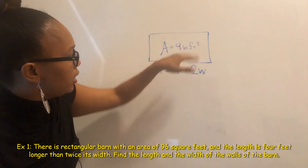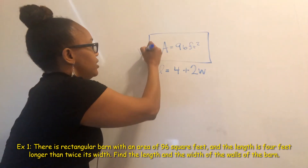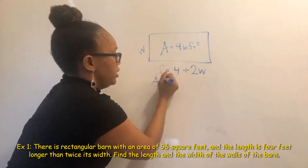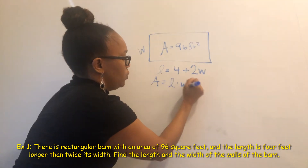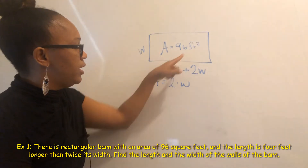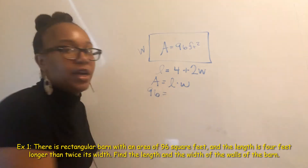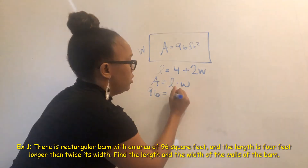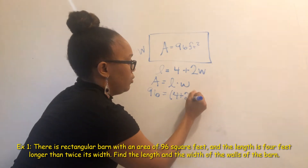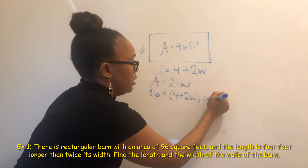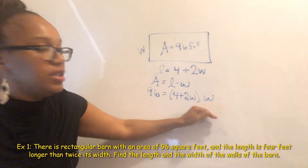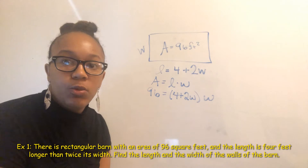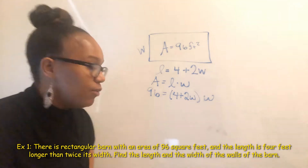What we know is the area, the length is four plus two W, and this side is the width W. One of the things you have to know is that area equals length times width. We know the area is 96, so we replace area with 96, replace length with four plus two W, and the width is just W. We end up with an equation with one variable, which is very important — we need only one variable to solve one equation.